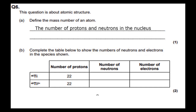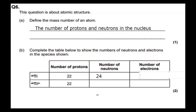Now below we've got a table. Complete the table to show the numbers of neutrons and electrons in the species shown. We've got two isotopes: titanium-46 and titanium-49 two-plus. For titanium-46, it's got 22 protons. Mass number minus protons gives us 24 neutrons. In a neutral atom, protons and electrons are equal, so we've got 22 electrons.